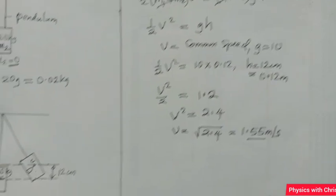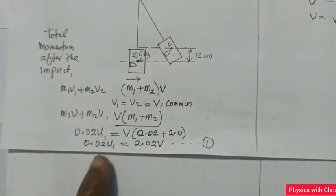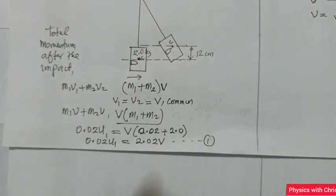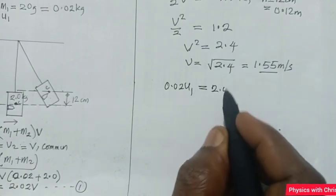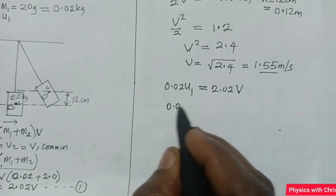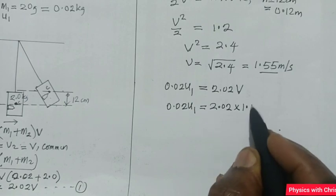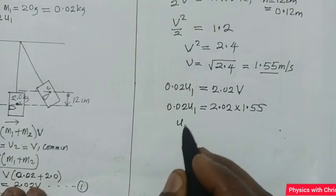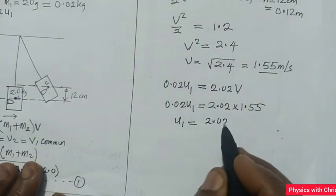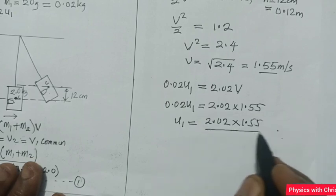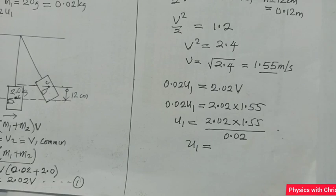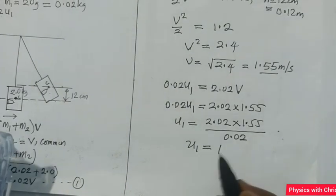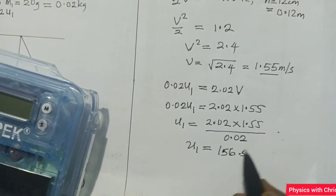Going back to equation 1, which has two unknowns — u1 and v — and now substituting v = 1.55 m/s: 0.02·u1 = 2.02 × 1.55. Solving for u1: u1 = (2.02 × 1.55) / 0.02, which gives the initial speed of the bullet as approximately 156.5 meters per second.